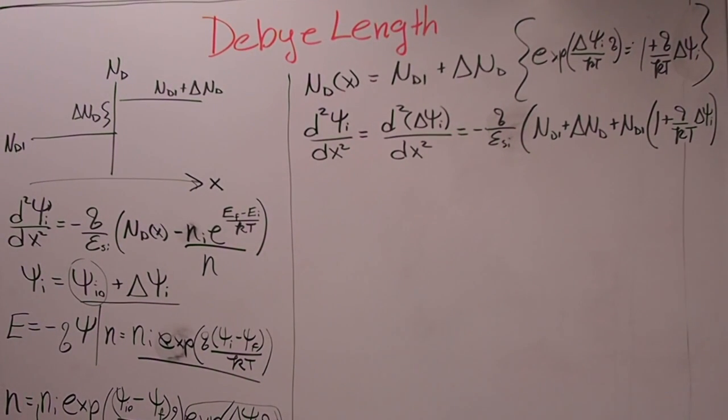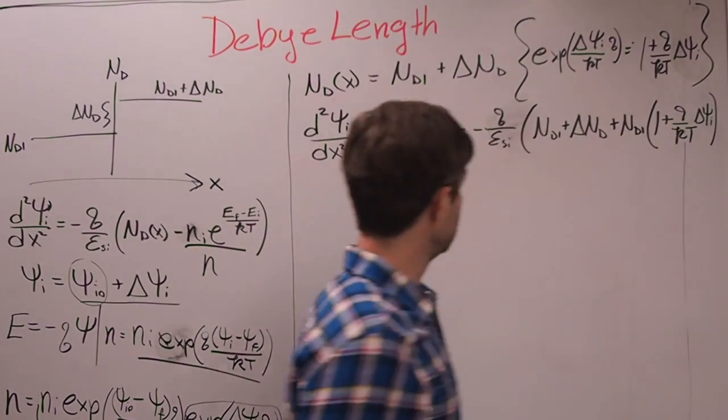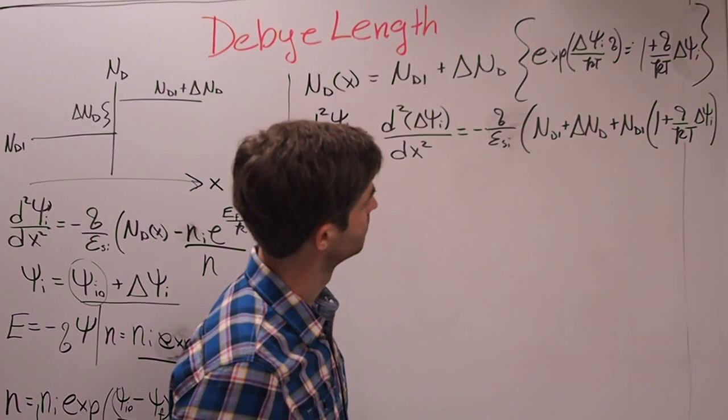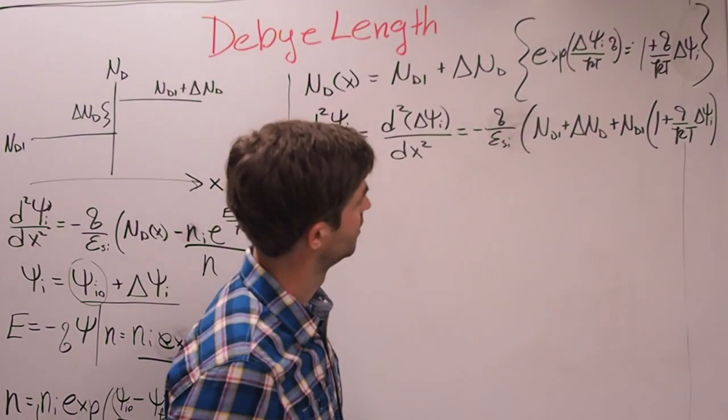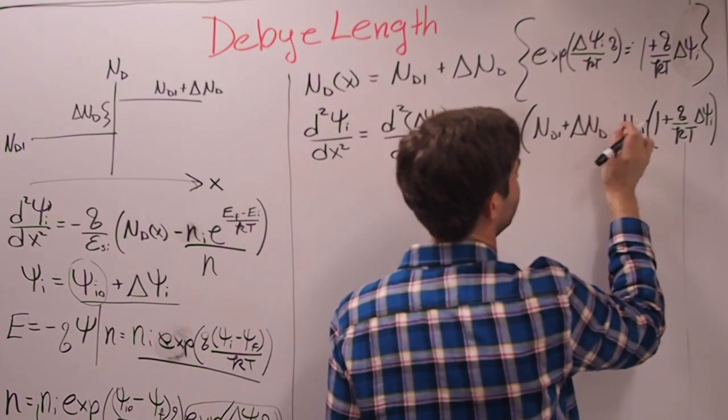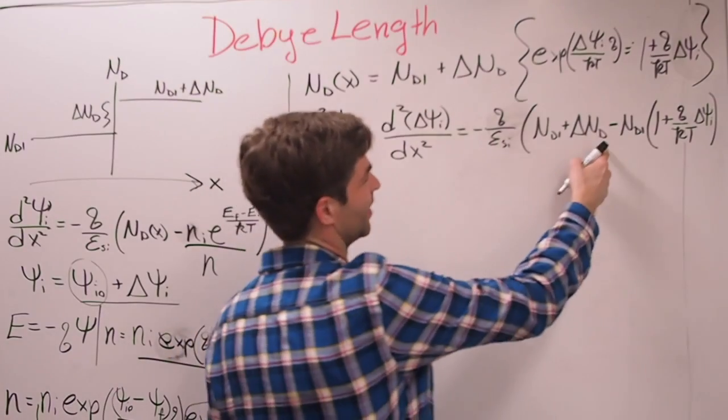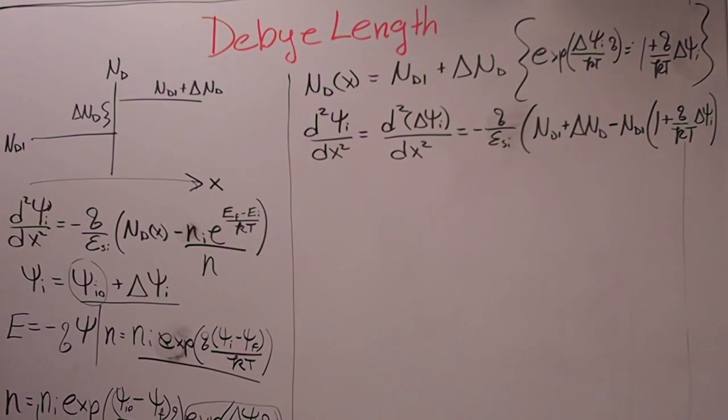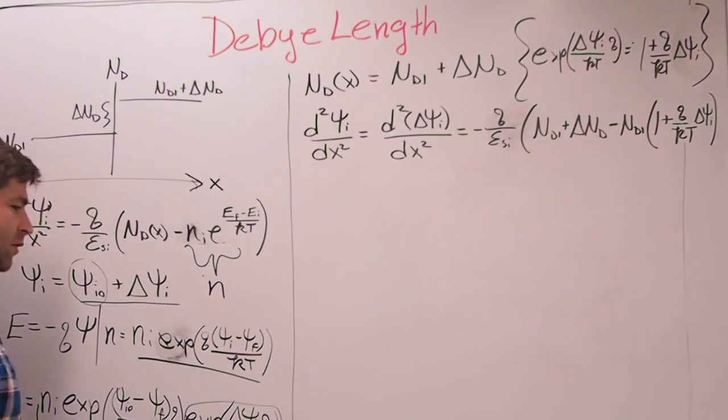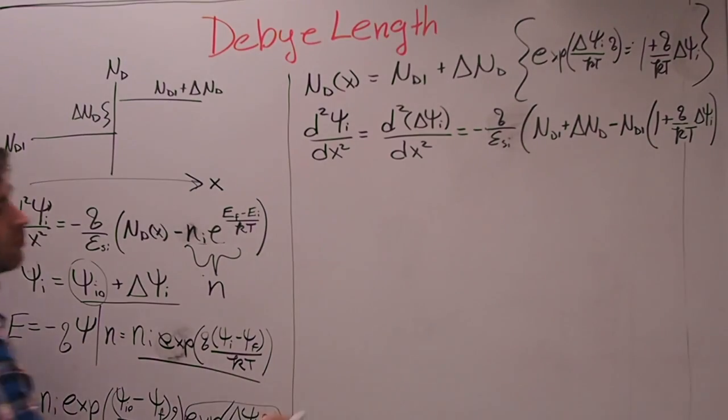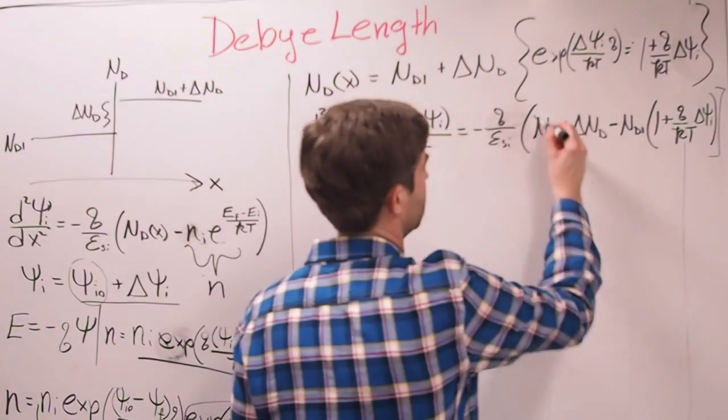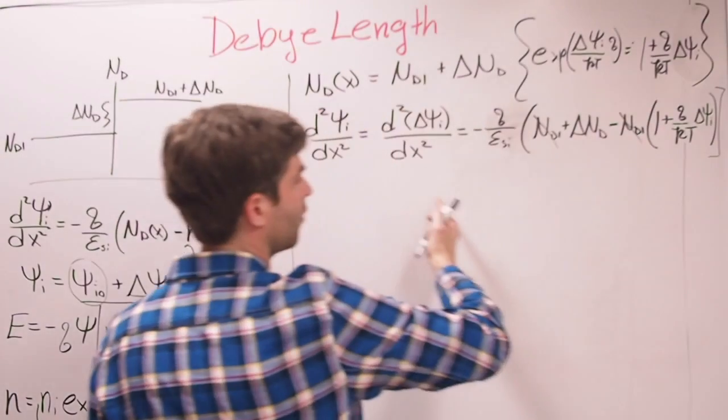So I'm going to rewrite some things here. That cancels out. I can bring this whole term over here. And I have D squared delta phi I over Dx squared.